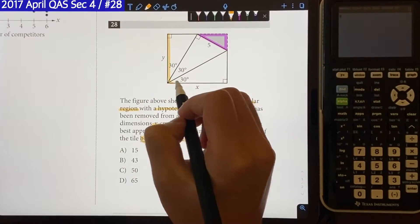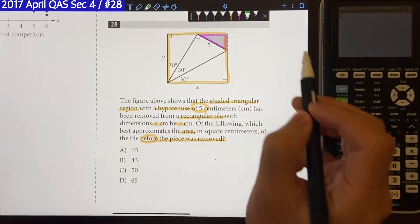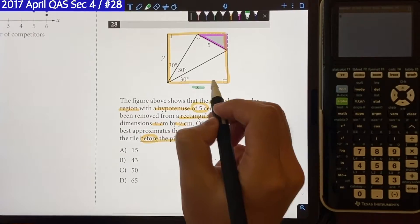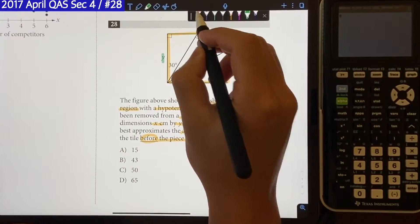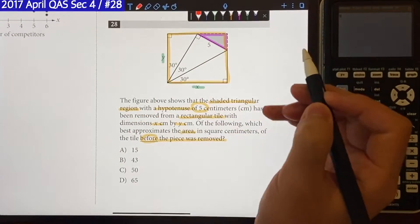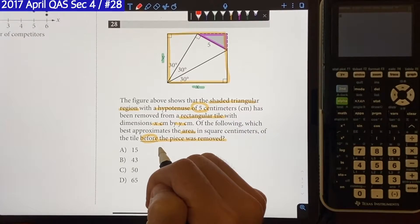So essentially we're looking for the area of this rectangle, which can be found by multiplying the length and the width. So our goal is to identify the length and the width, multiply, that will give us the area of the tile. But how are we going to do that?